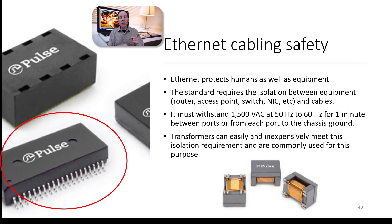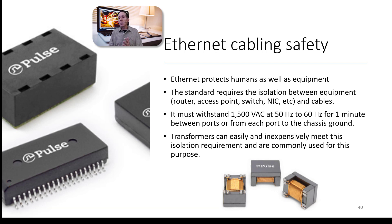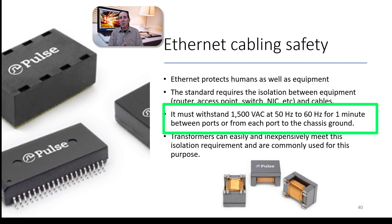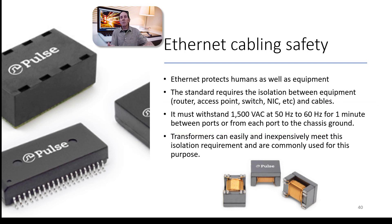If you look at the picture on the left, you'll see components that look like IC chips — those are not IC chips, those are transformers. Ethernet protects humans as well as equipment. The standard for Ethernet cabling separates electronic equipment from the cabling, and it has to be able to withstand over 1500 volts AC for up to a minute between the cable and any fault in any piece of electronic equipment.